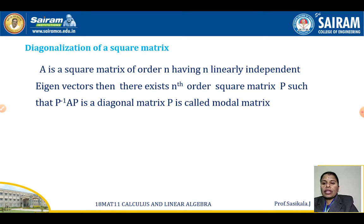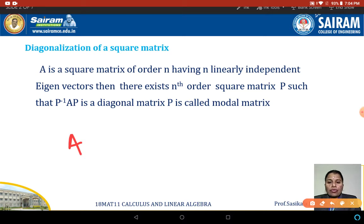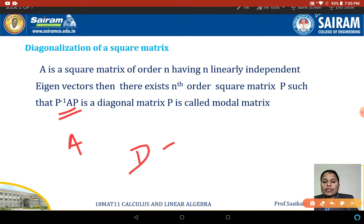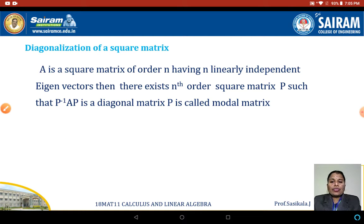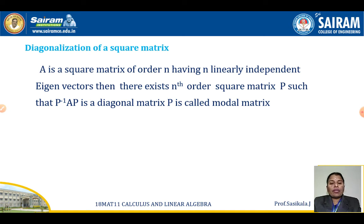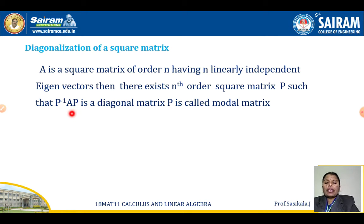As per the definition, you can use it only with a square matrix A. To find the diagonalization of a square matrix, you use the formula P inverse AP, which gives you the diagonal matrix. P is the modal matrix, which is found by computing the eigenvalues and eigenvectors of A. All the eigenvectors arranged in a matrix form the modal matrix, and using its inverse you can compute P inverse AP to get the diagonal matrix.